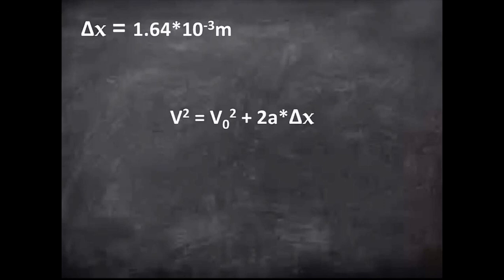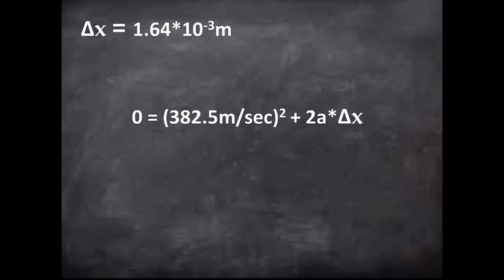This equation relates velocity, acceleration, and displacement. V represents the final velocity of the object, in this case the bullet, which would be zero. Zero squared is still zero. V0 represents the initial velocity, which as we said earlier, is 1255 feet per second. If we convert this to meters, we get 382.5 meters per second. Now if we square this and convert to scientific notation, we get this.